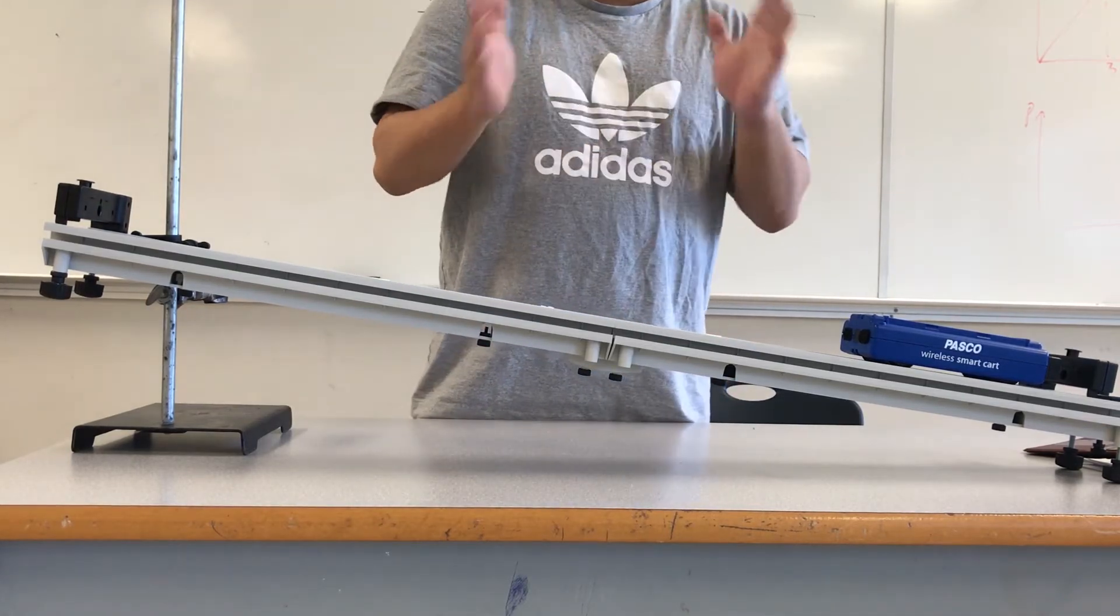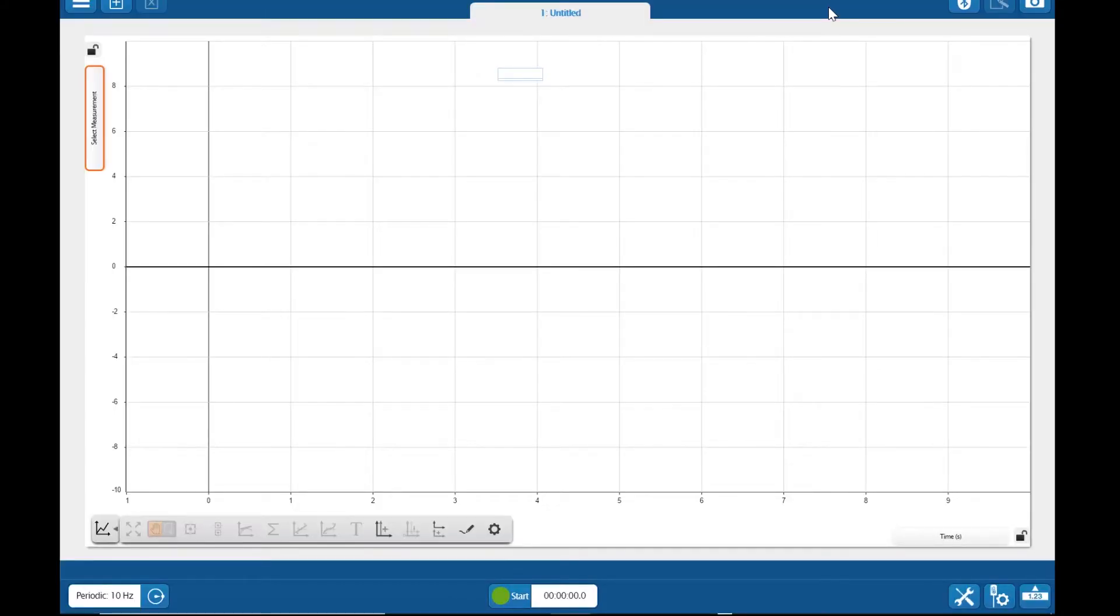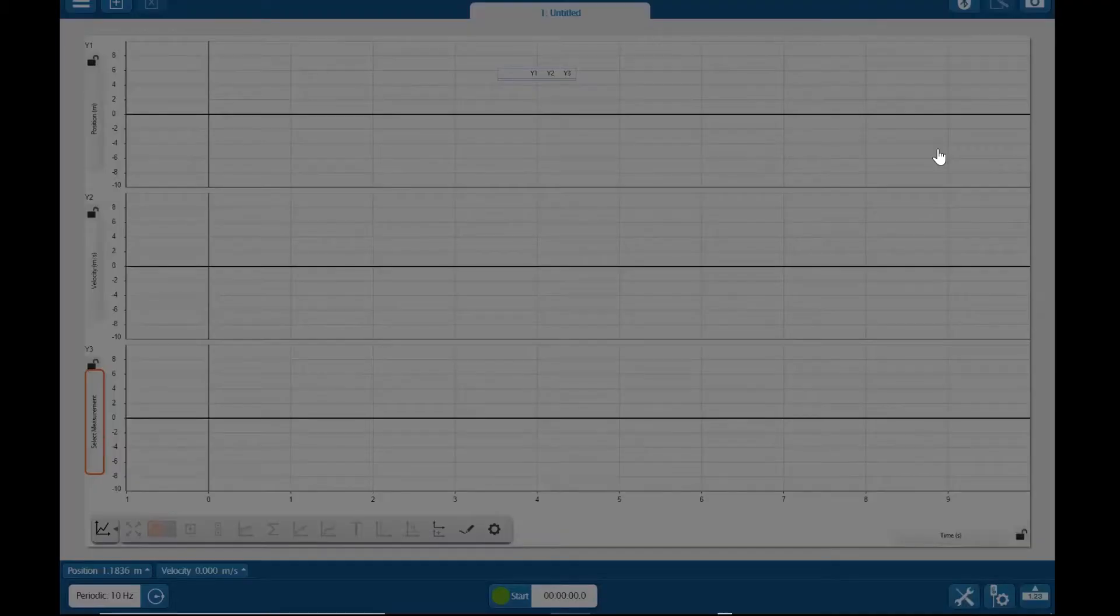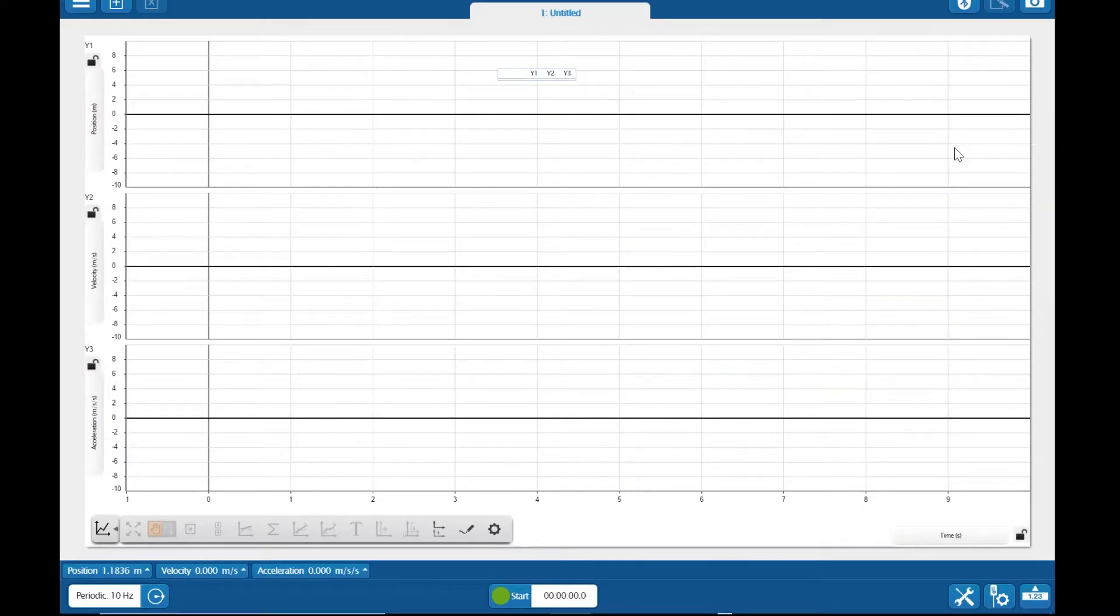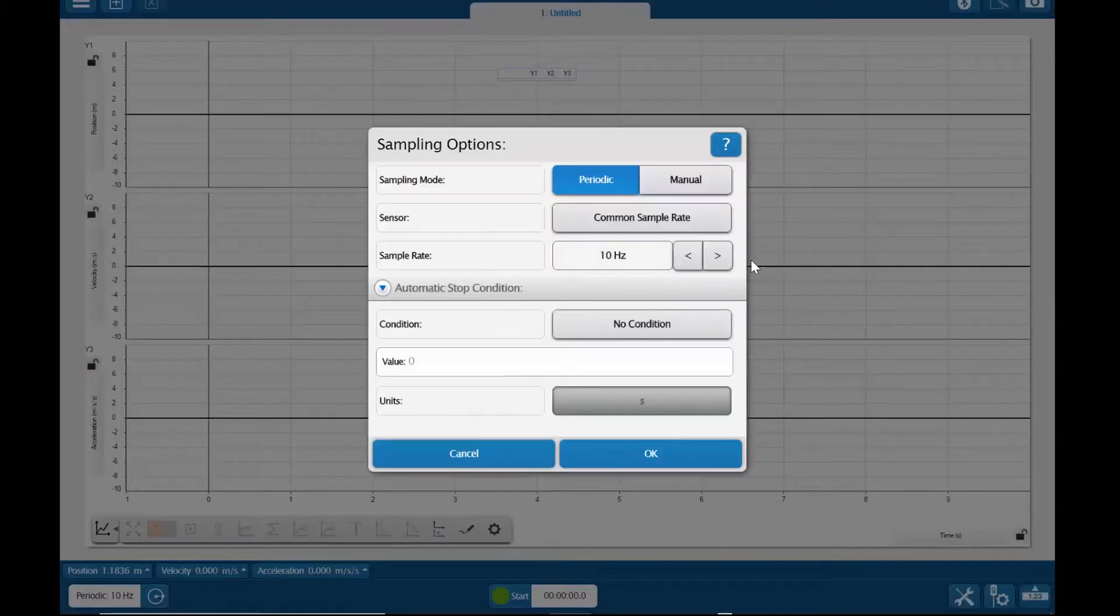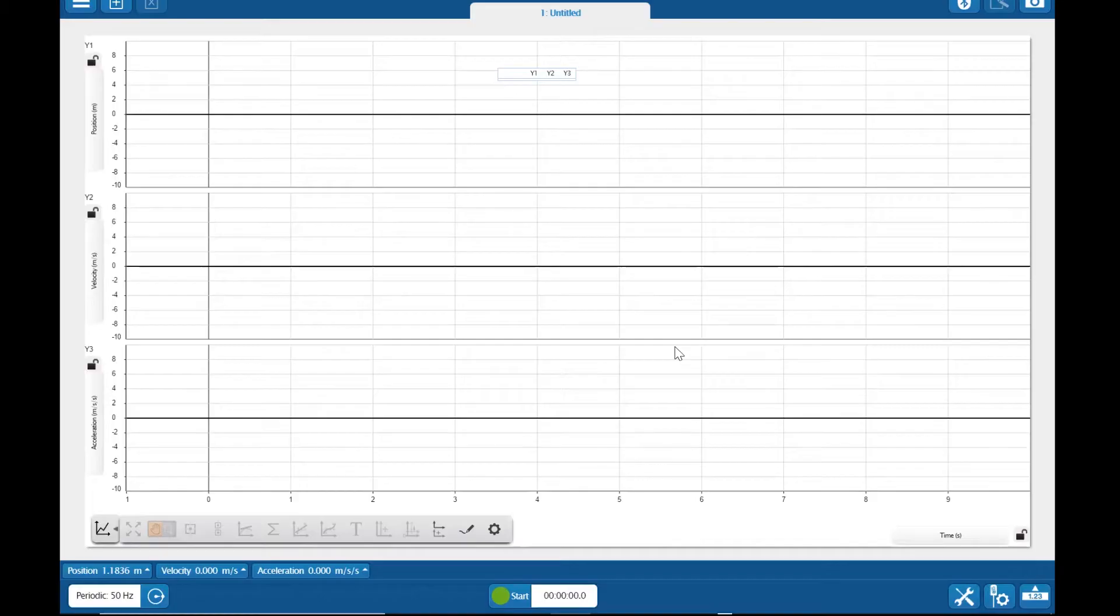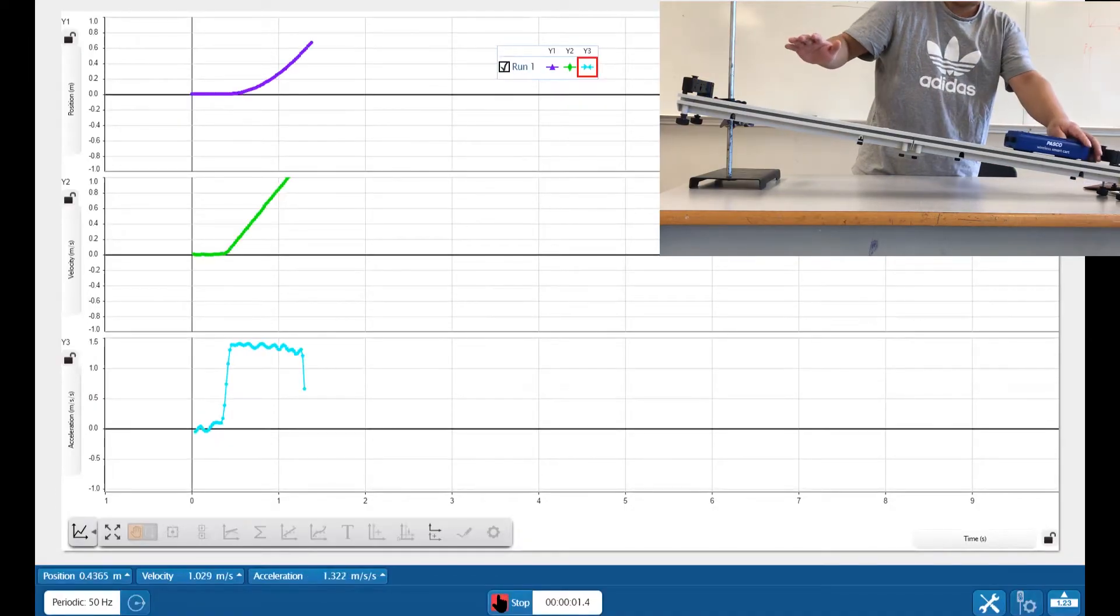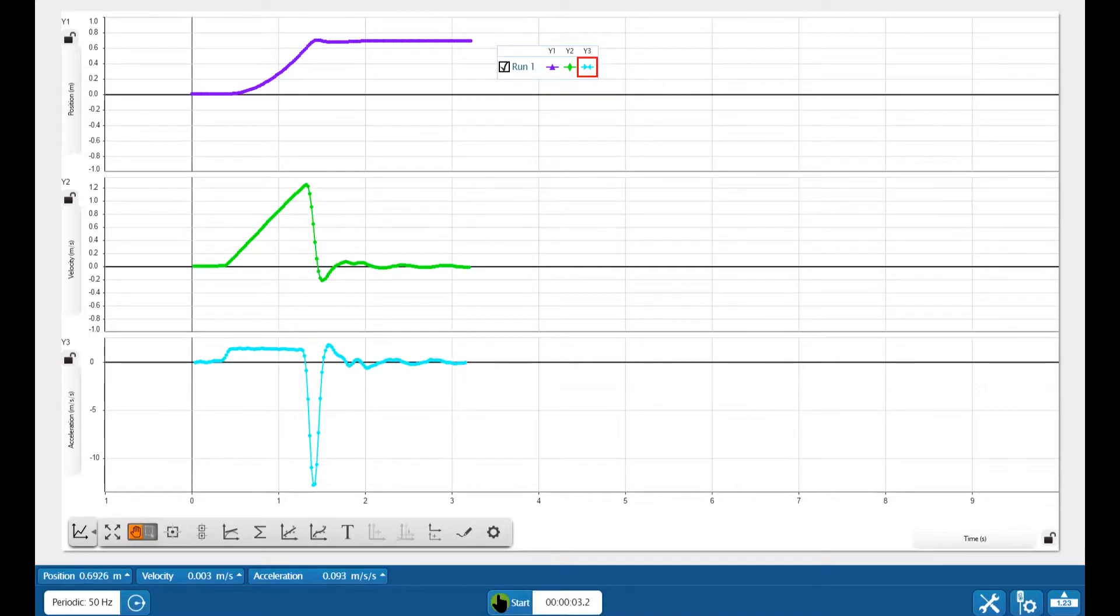And also, I want to show you how to set up your SparkView app. This time, you want to have all position, velocity, and acceleration graphs on there on the same page. So what you do is you select position, and then you add another axis and you select velocity, add another one and select acceleration. And then for the frequency, 50 hertz will be good. And then you click on start, and you can roll the card down the track. Let's go ahead and do that.